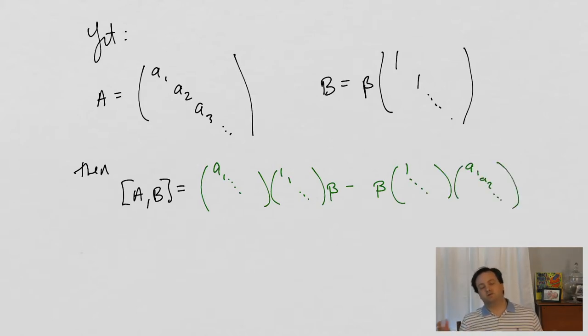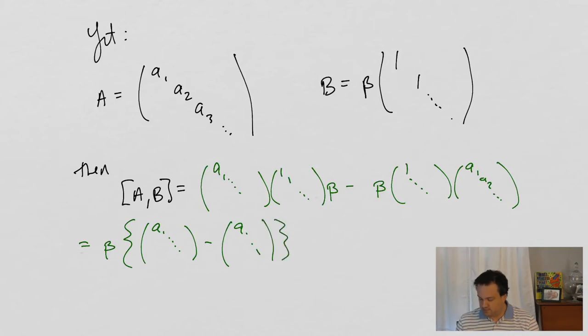And now, of course, you say, well, Tom, you chose something really easy because the identity matrix times any matrix is just going to be that matrix. And so I end up with beta that's common to all of the terms, A1 dot dot dot dot minus A1 dot dot dot, well, that's going to equal zero. And so basically any matrix commutes with the identity matrix.